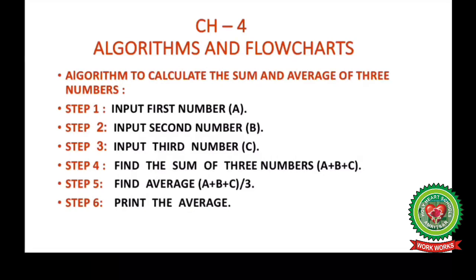We have three numbers: A, B, and C. We have to find the sum of these three numbers and the average of these three numbers.